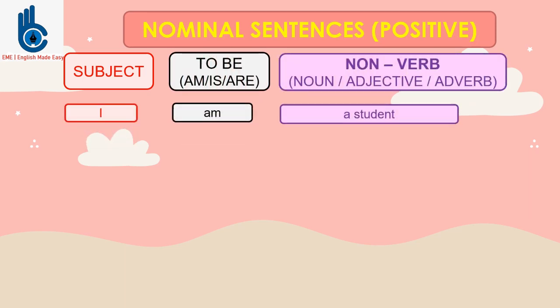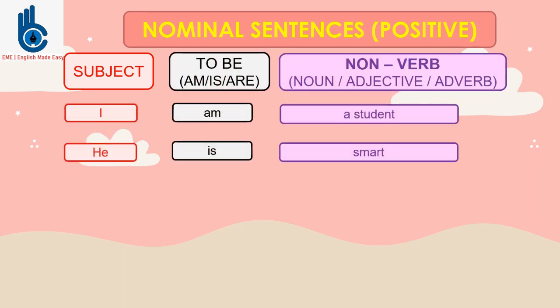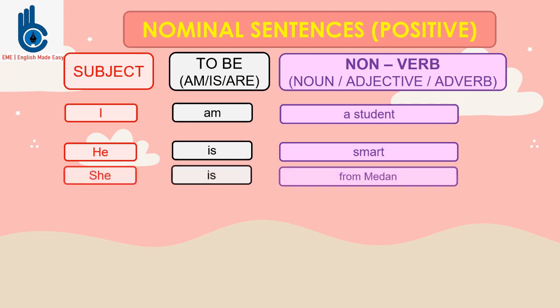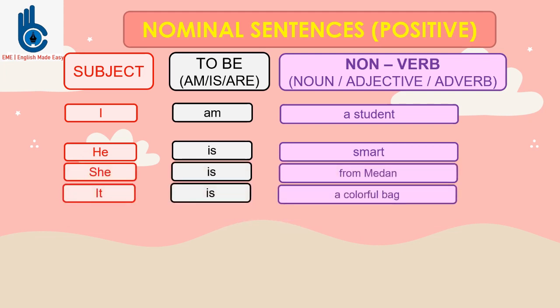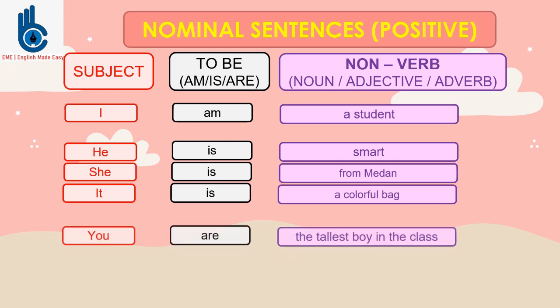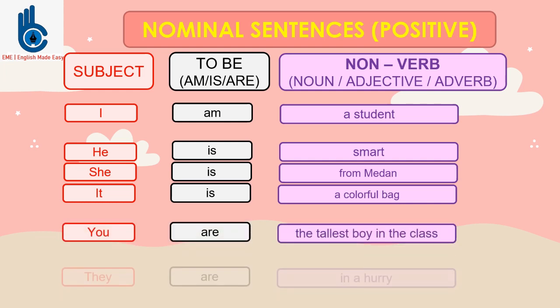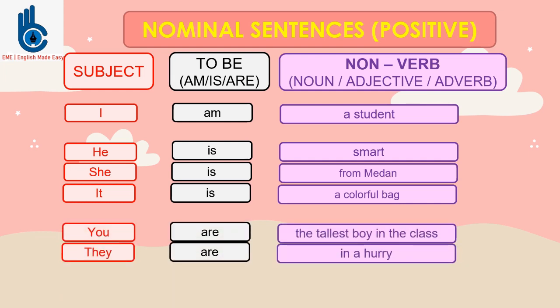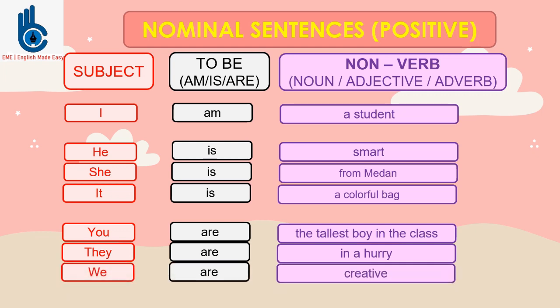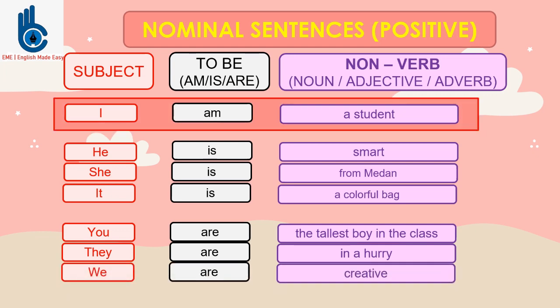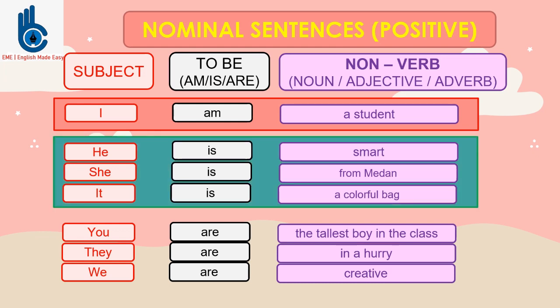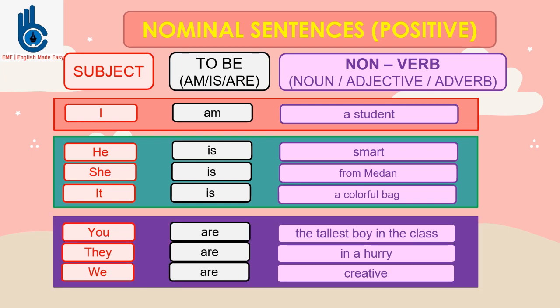For example: I am a student. He is smart. She is from Maidan. It is a colorful bag. You are the tallest boy in the class. They are in a hurry. We are creative. There are three to be that we use: am is used for subject I; is is used for he, she, it; and are is used for you, they, we.